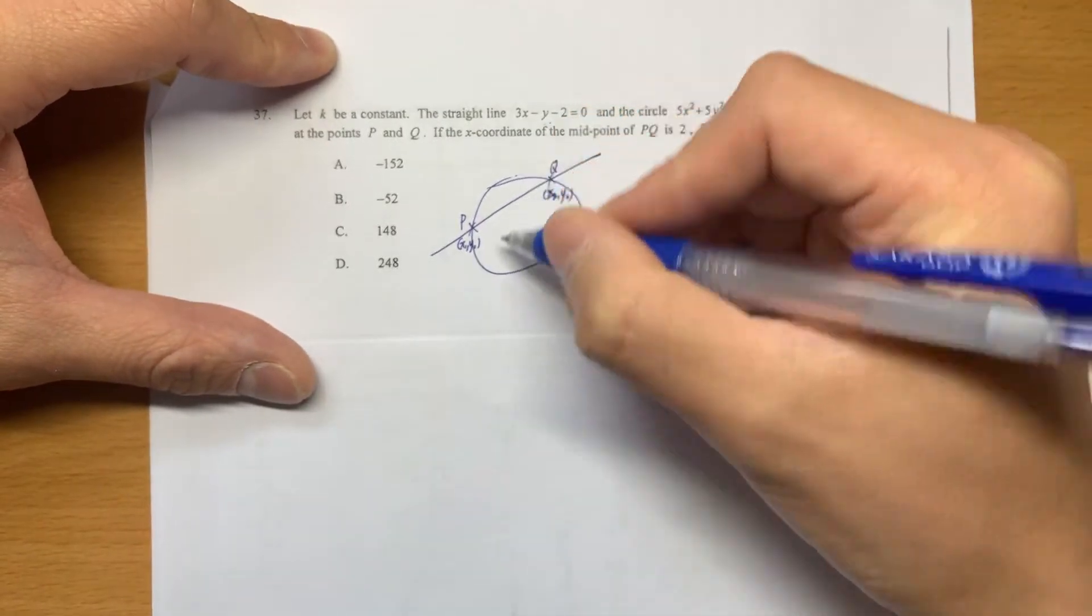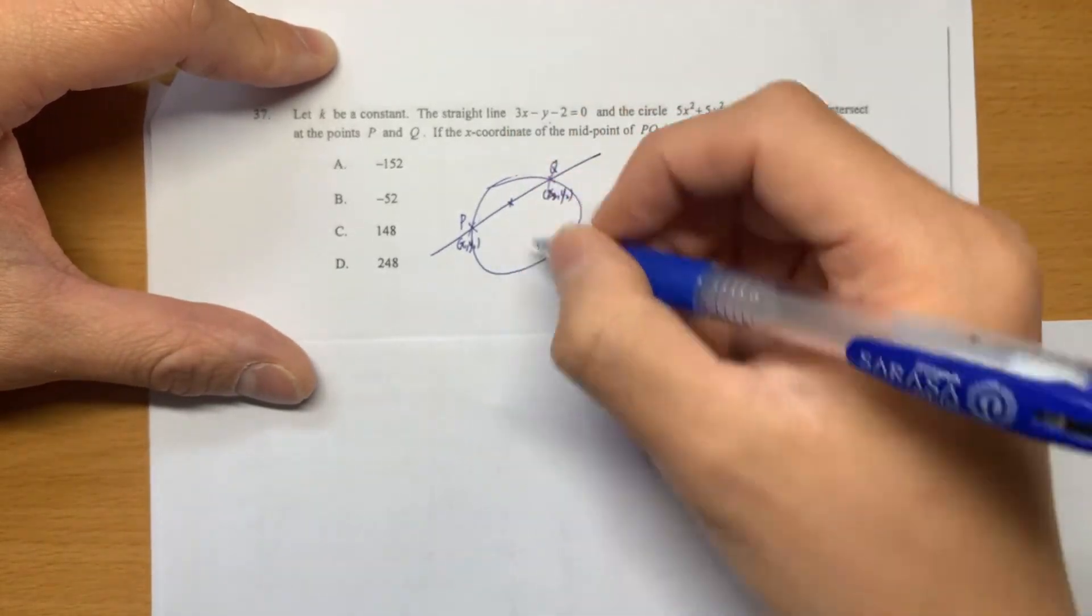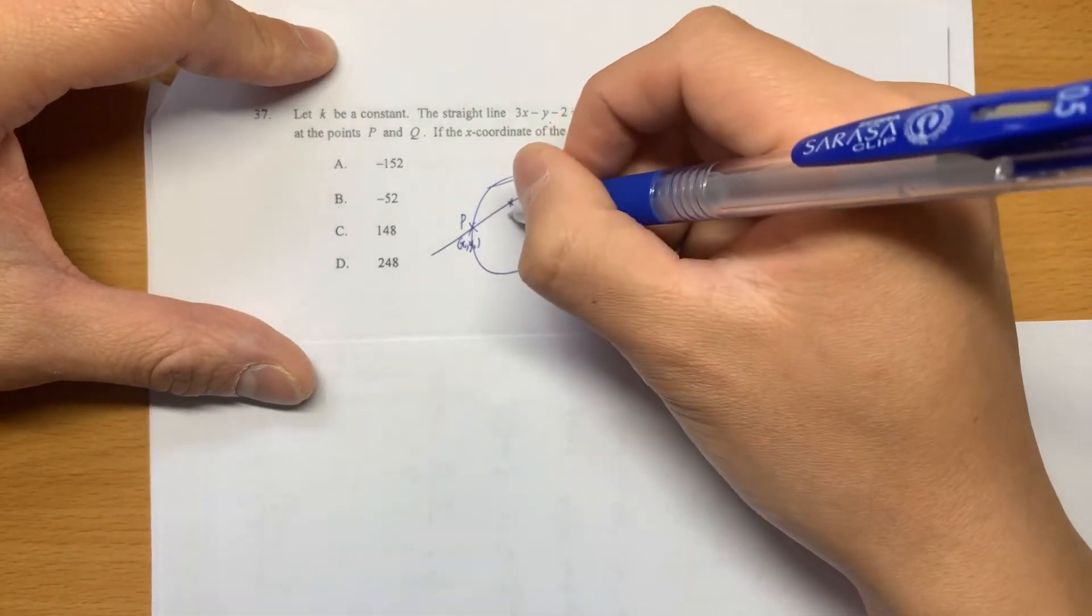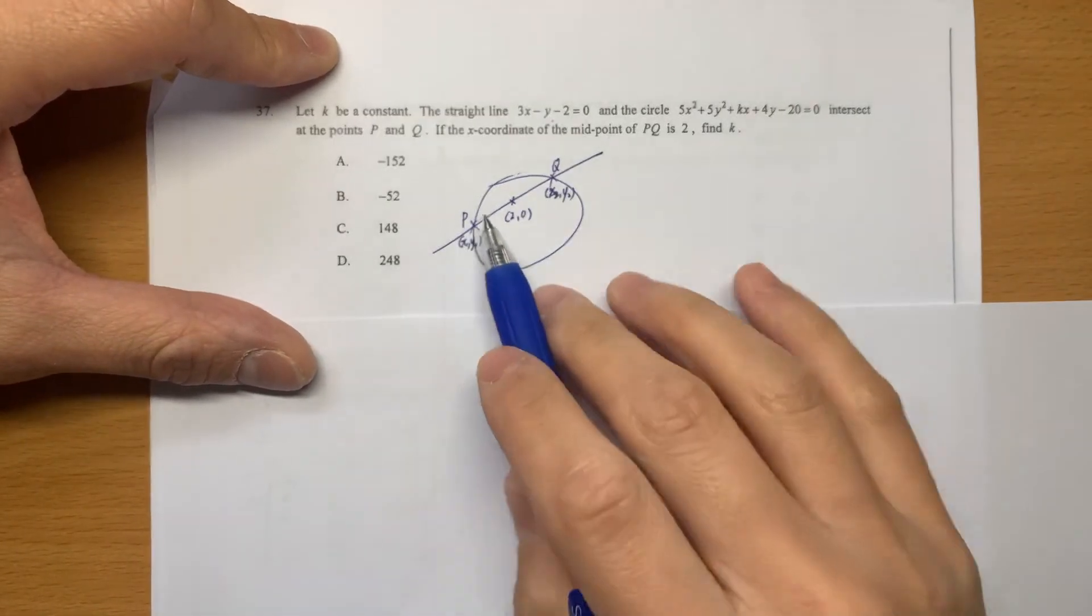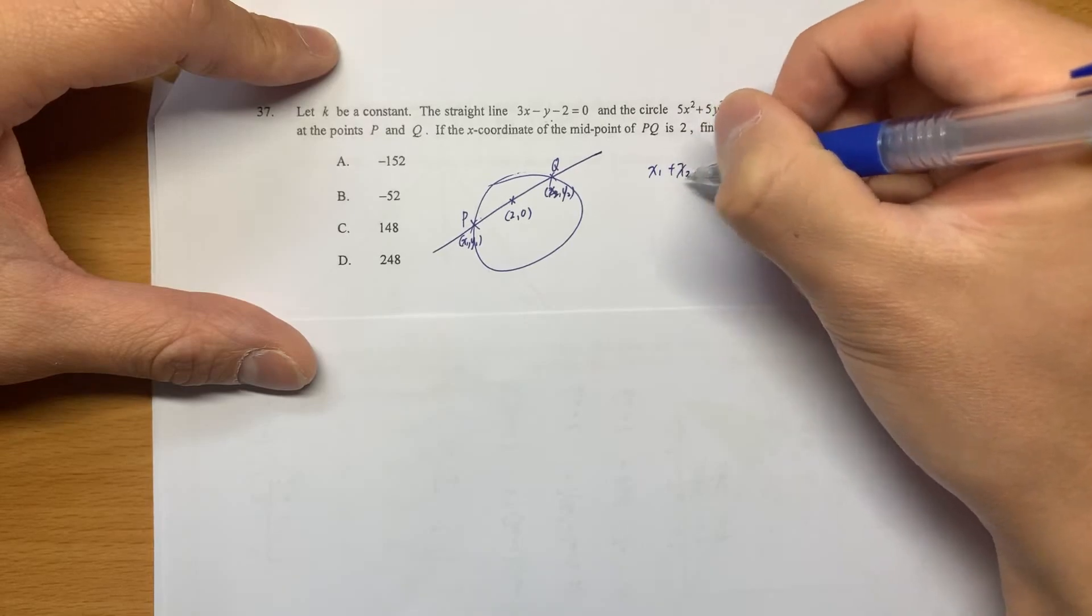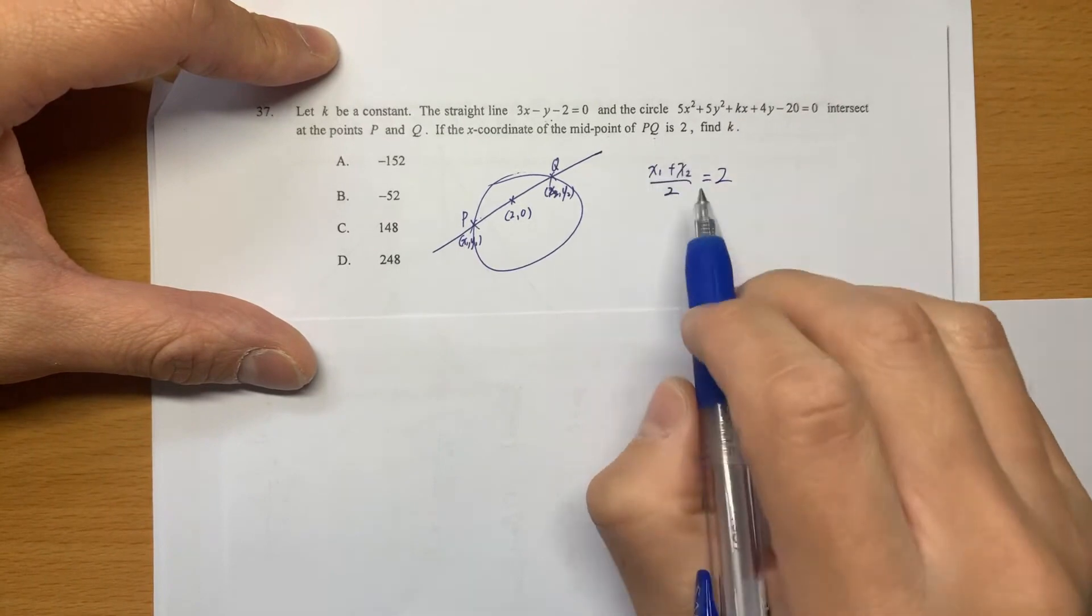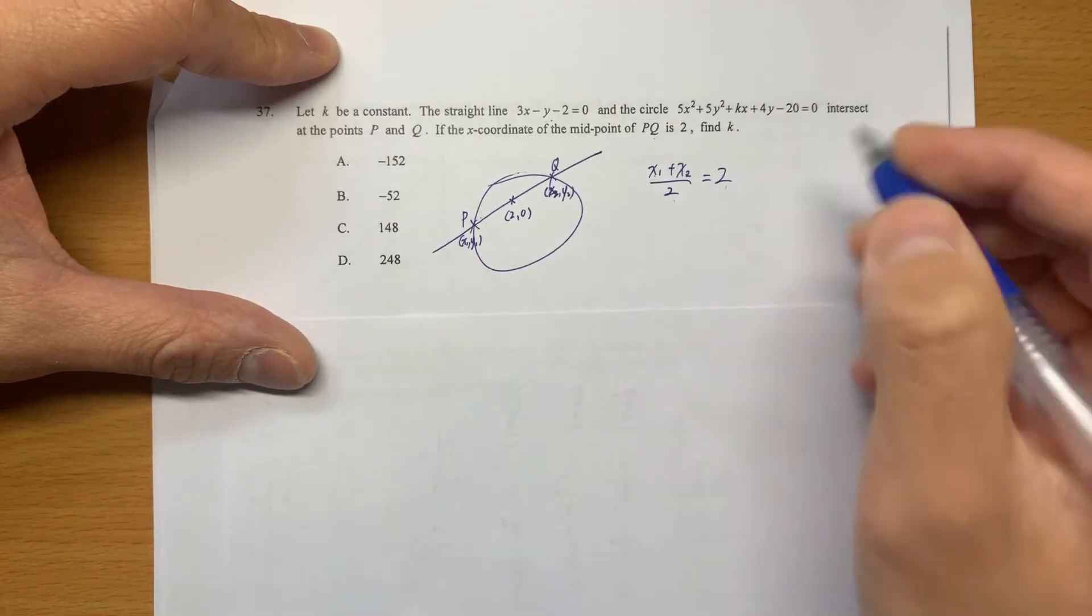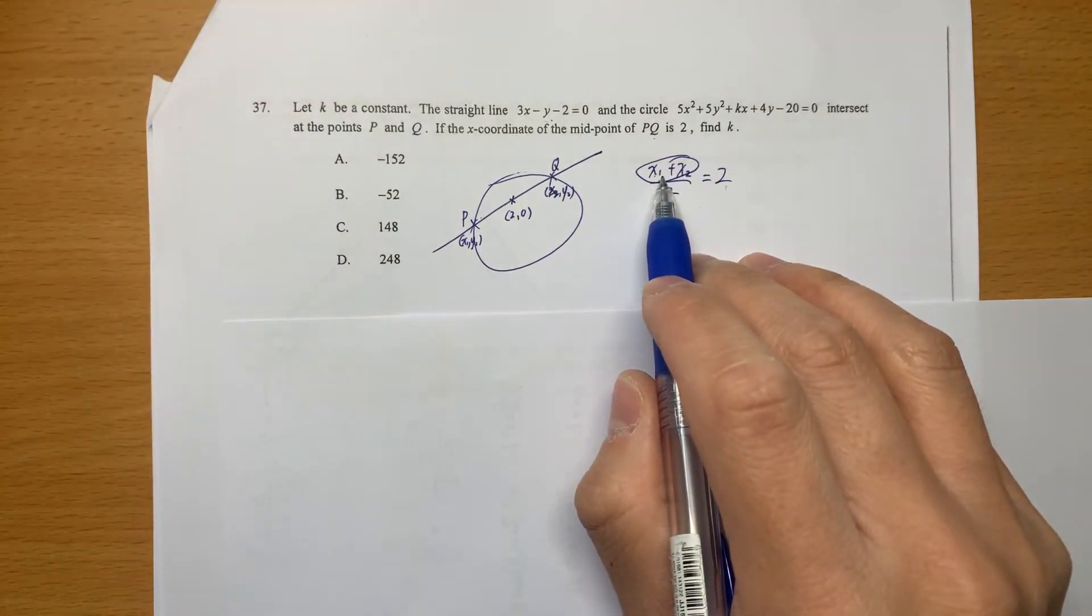What we are interested in is not P and Q itself, but we are interested in the midpoint. And they say that this is 2, 0. About the strategy, we know that the two solutions x1 plus x2 divided by 2 is the x coordinate of the midpoint. So basically they try to tell you that x1 plus x2 over 2 is 0.